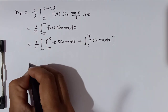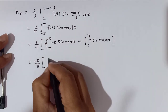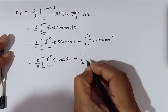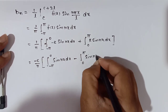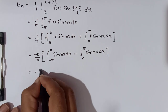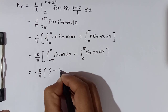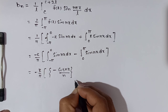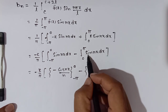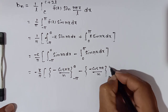We break the integral: from -π to 0, f(x) = -k, giving integration of -k·sin(nx) dx, plus integration from 0 to π of k·sin(nx) dx. Solving the integration of sin(nx) gives -cos(nx)/n, with limits -π to 0 for the first part and 0 to π for the second.